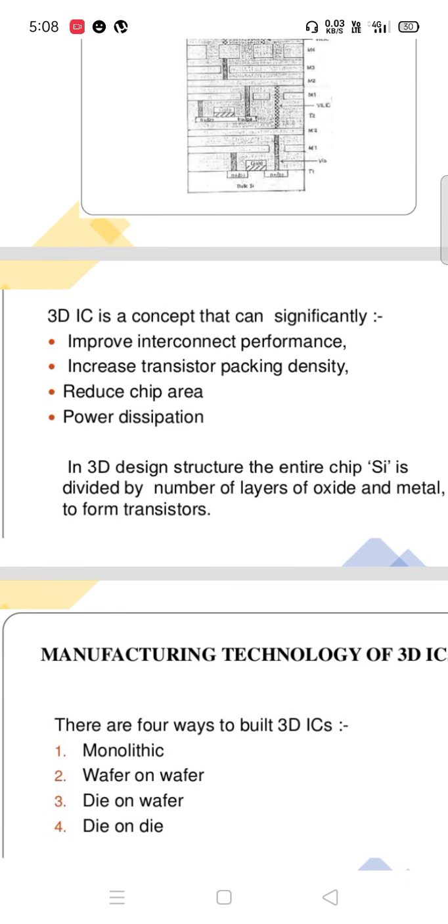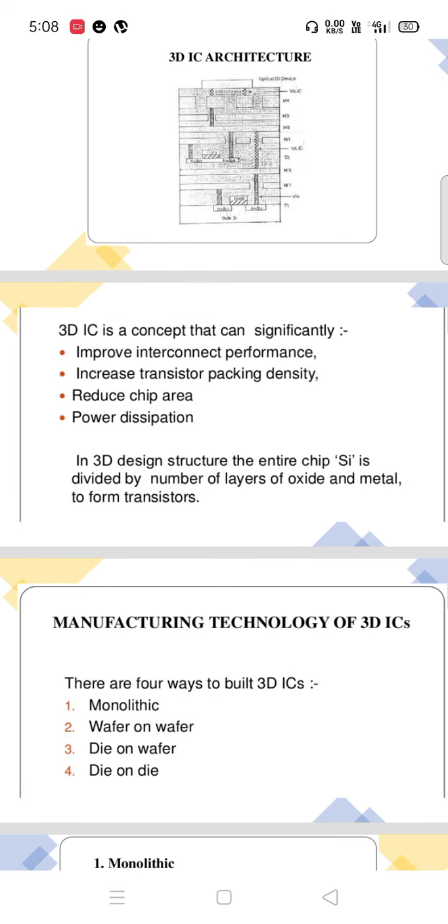3D IC is a concept that can significantly improve interconnect performance, increase transistor packing density, reduce chip area, and reduce power dissipation. In 3D design structure, the entire chip silicon is divided by number of layers of oxide and metal to form transistors.